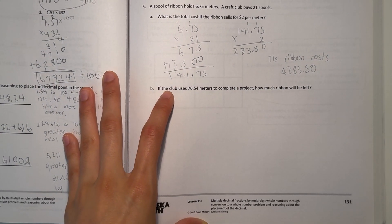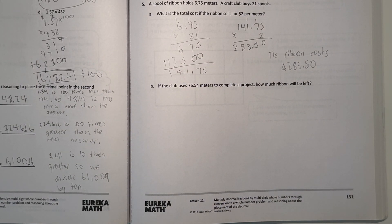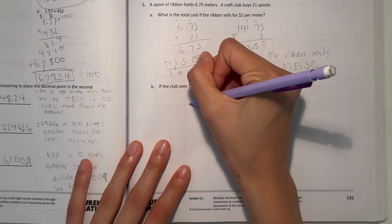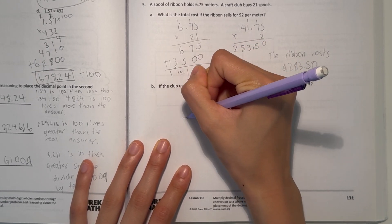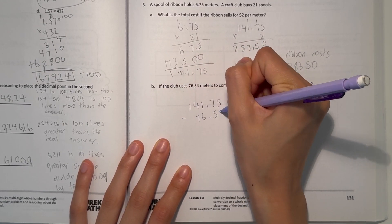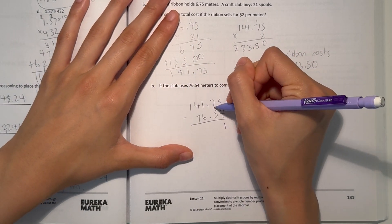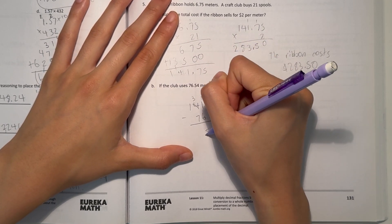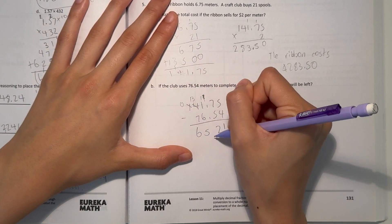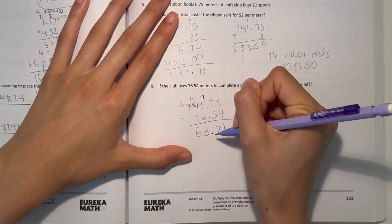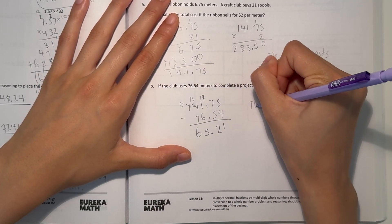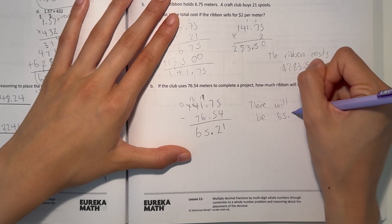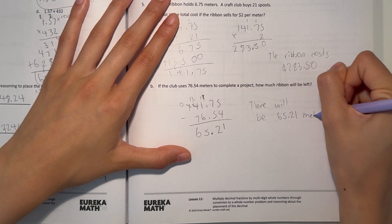And B says if the club uses 76.54 meters to complete a project, how much ribbon will be left? So we go back to 141.75, that's how many meters they have right now. So they're using 76.54. Line up the decimals. 5 minus 4 is 1, 7 minus 5 is 2, 1 minus 6, we need to borrow. 11 minus 6 is 5, 3 minus 7, we need to borrow. 13 minus 7 is 6. Bring the decimal point here for subtraction. So there will be 65.21 meters left.